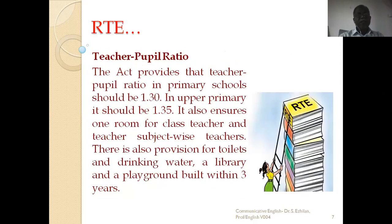The act provides that the teacher-pupil ratio in primary schools should be 1 to 30 — that is, one teacher for 30 students. In upper primary schools, it should be 1 to 35 — one teacher for 35 students. The act also ensures one room per class and subject-wise teachers, meaning not just one teacher handling all five subjects; there must be a teacher for each subject.